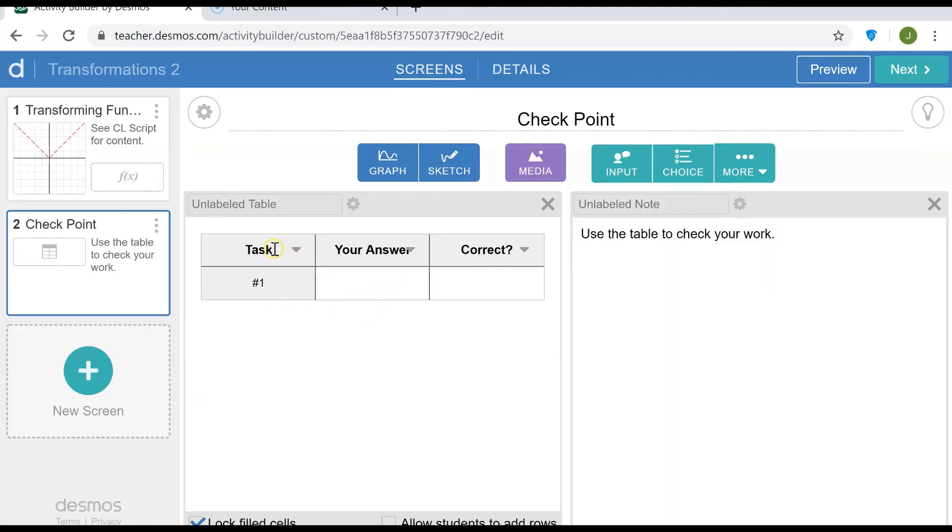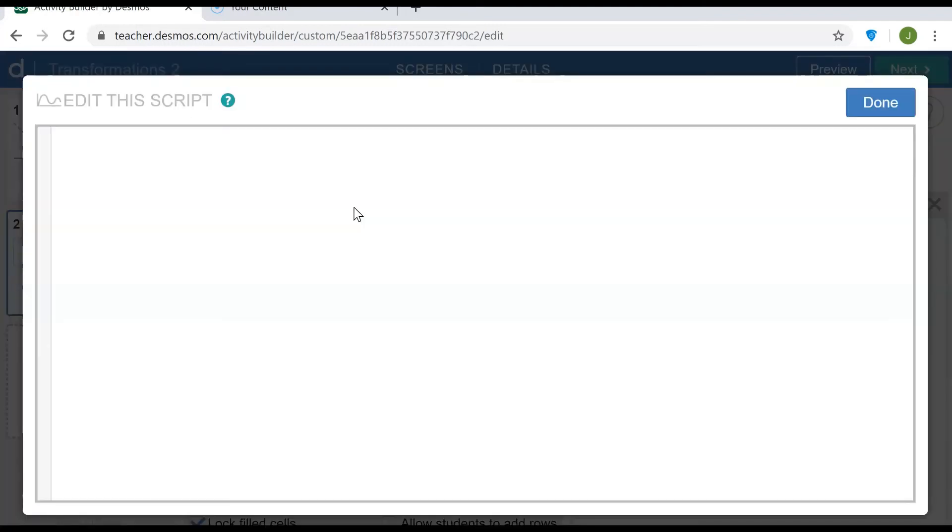So now one more thing to mention: the title row is called row 0 and this row underneath it is row 1. And so in the computation layer I'm going to define the cell content of row 1 column 2, and when the answer has been submitted, referring back to input1 from the first slide.